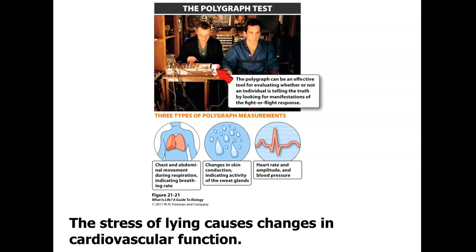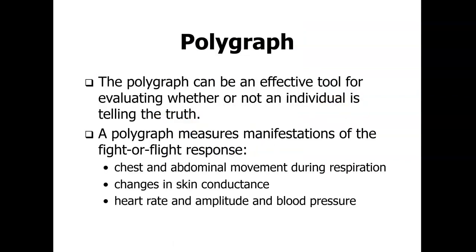Polygraph tests use the cardiovascular system to detect stress and determine if someone is telling the truth. They measure chest and abdominal movement during respiration, changes in skin conductance (sweating), and heart rate amplitude and blood pressure — increases in these indicators suggest stress, which is interpreted as deception.